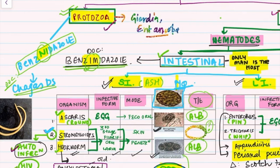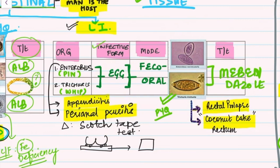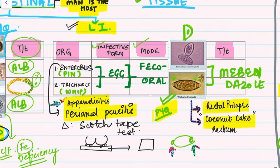For the large intestine we have only two organisms: Enterobius (pinworm) and Trichuris (whipworm). Both have egg as the infective form and mode is feco-oral. Importantly, Enterobius has a plano-convex egg — one side flat, one side convex — whereas Trichuris has a mucus plug at both ends. The Trichuris egg image is probably the most frequently asked egg image. Enterobius causes appendicitis and perianal pruritus; diagnosis is by the scotch tape test.